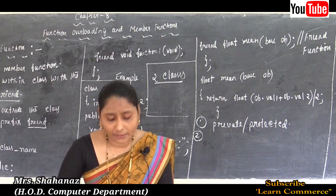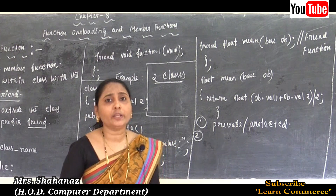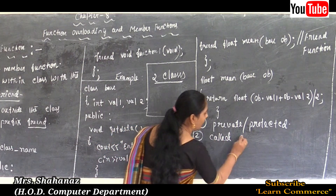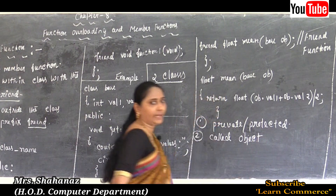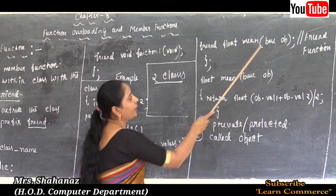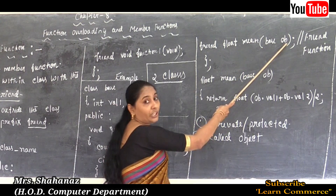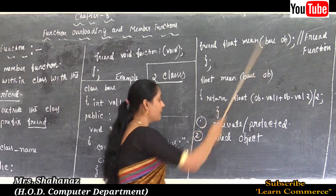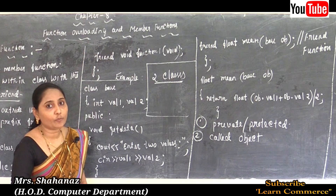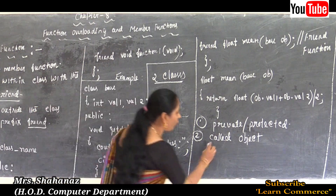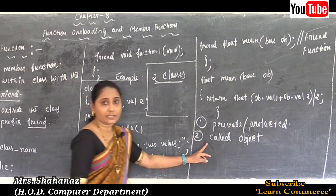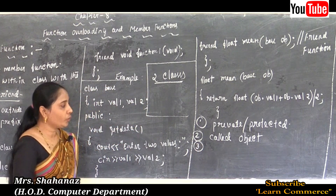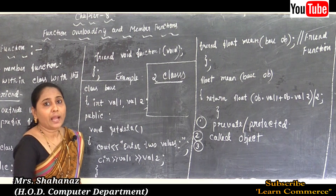Second note: the friend function cannot be called using the object of that class. The object used in the friend function is not the object of the base class — it is the friend function class object. The friend function can be defined like a normal function.